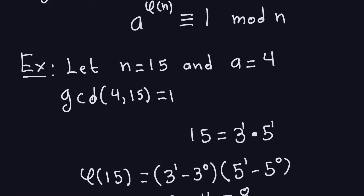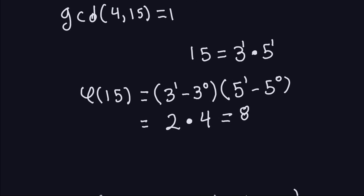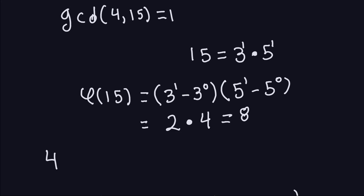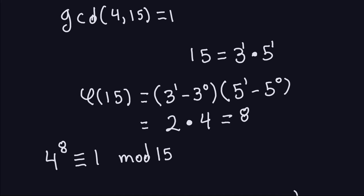So what the theorem says is: take the number a, which in this case is 4, take it to the 8th power because that's phi of 15, and that should be congruent to 1 modulo 15. So I have 4 to the 8th, which must be congruent to 1 modulo 15. According to the theorem this should be true because the greatest common divisor between 4 and 15 is 1. Now, 4 to the 8th is equal to 65,536.